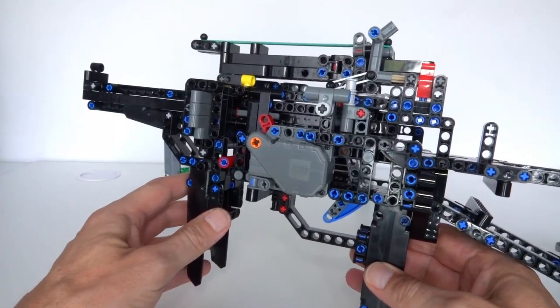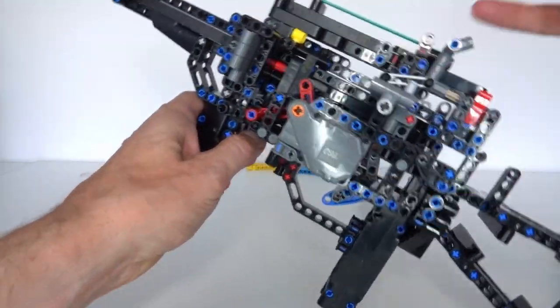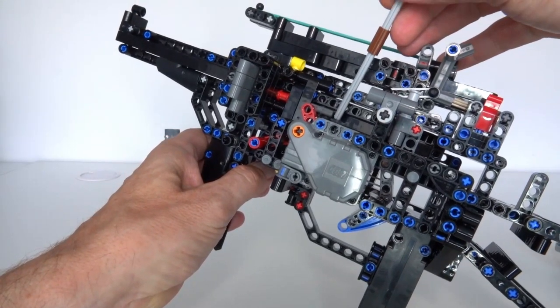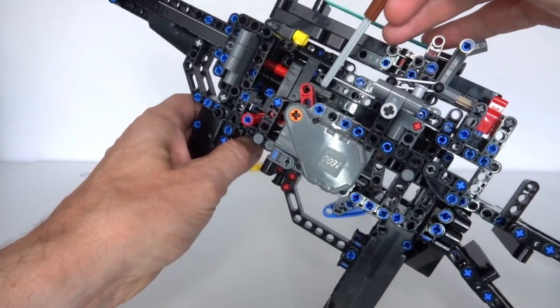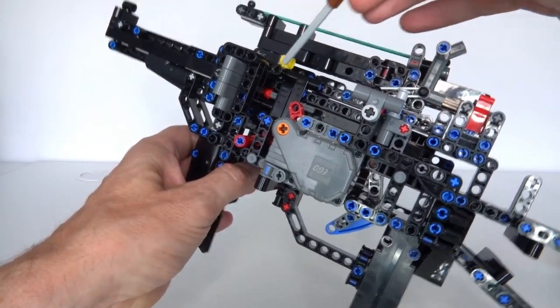Okay, so then finally I'll just tell you a bit about the bullet firing chamber and mechanism. So like I said before, I've got this pin here that is fired by the gun, by those pullback motors. And what they do, they fire the bullet out of the barrel of the gun.